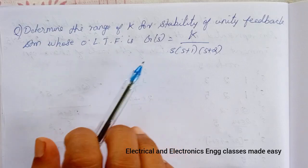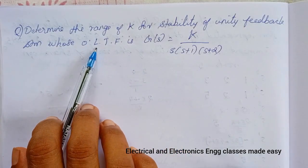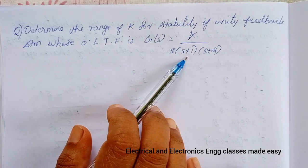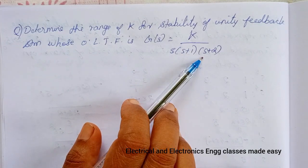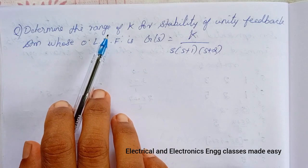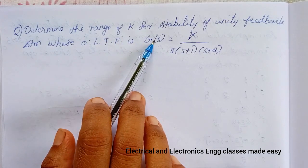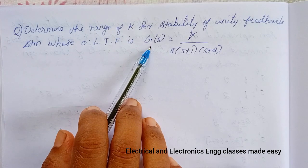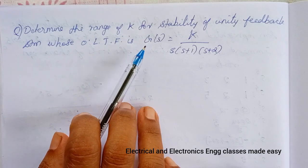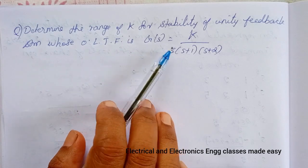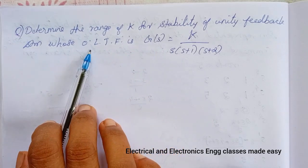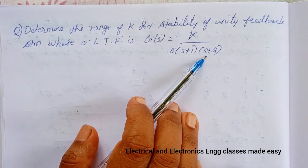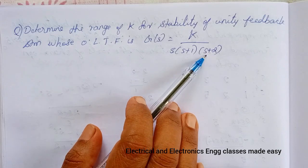Let us go through the problems. Determine the range of K for stability of a unity feedback system whose open loop transfer function is G(s) = K / [s(s+1)(s+2)]. To analyze the stability using the Routh criterion, we need to know about the characteristic equation.